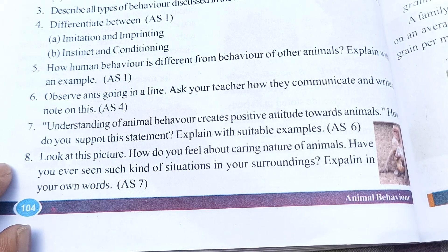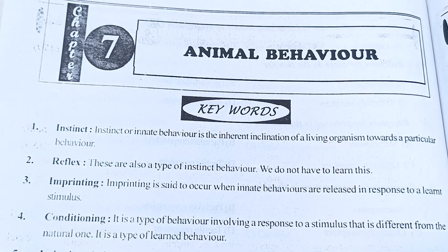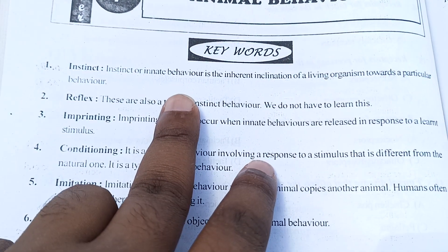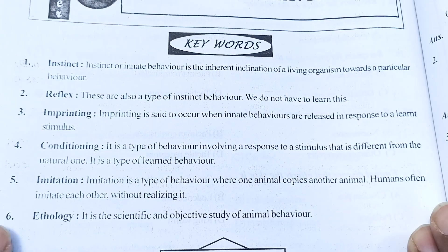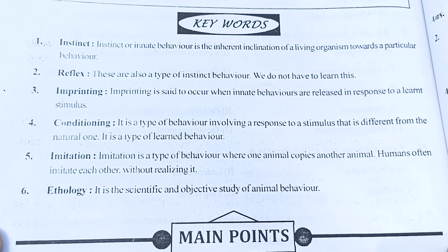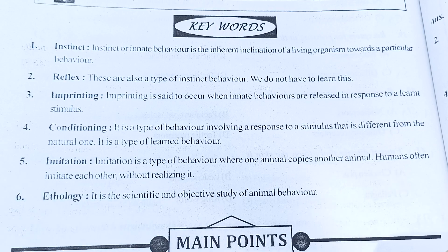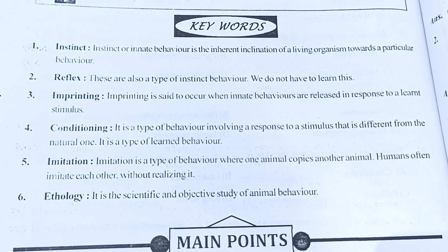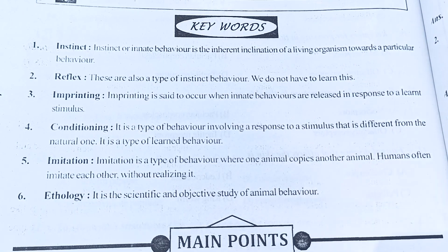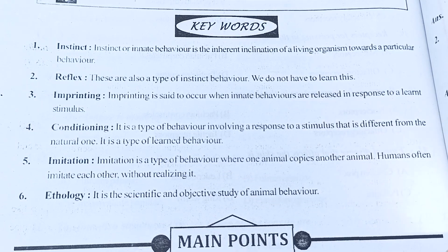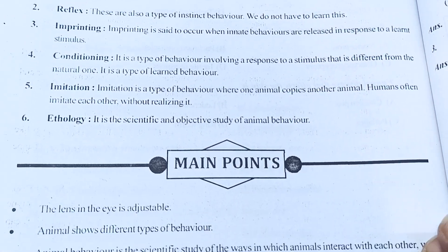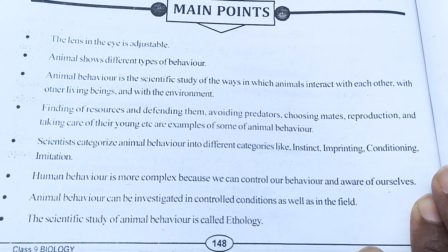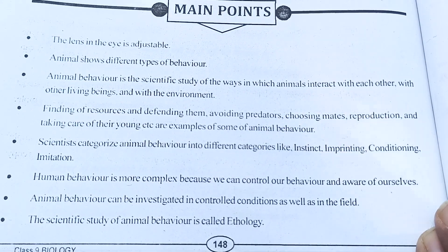So now let's move to our answers. You can see this is our Chapter Number 7, Animals Behavior, and these are the keywords. You can easily write these keywords. So you can see all of our keywords here. If the video clarity is not clear, just go to the quality settings and increase it from there. And this is the main point — I think it's not very important, so just leave it.